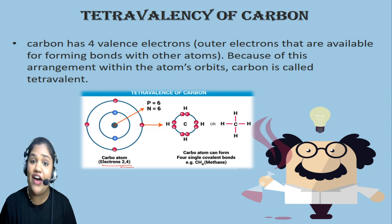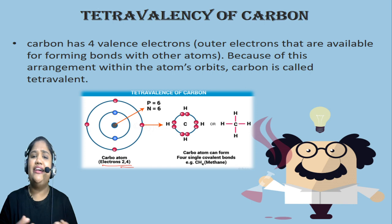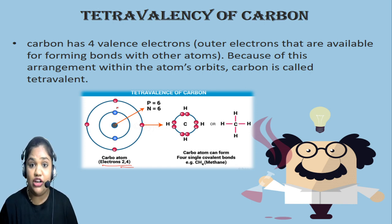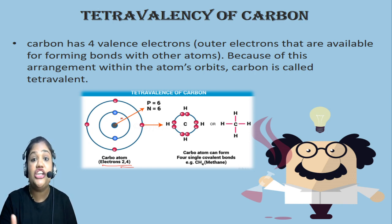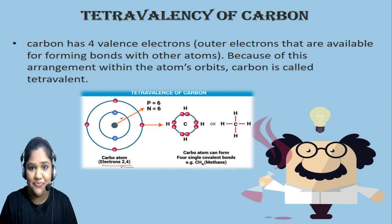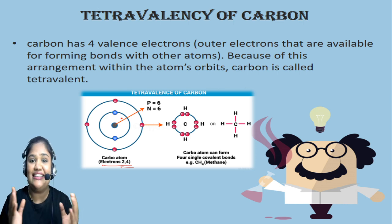As we discussed, valence electrons are those electrons present in the outermost orbit of an atom. In the outermost shell of carbon, there are 4 electrons. To attain stability, carbon needs to share those 4 electrons — either with carbon itself or with other elements. In this way, it can attain stability in nature, and this property is known as the tetravalency of carbon.